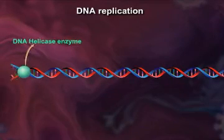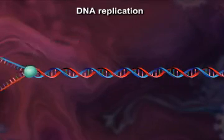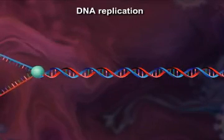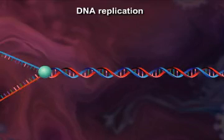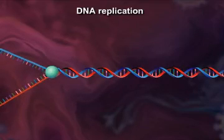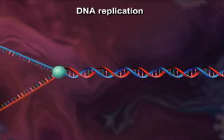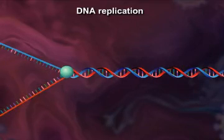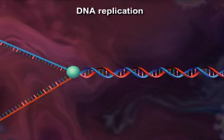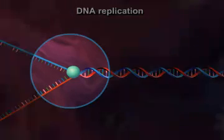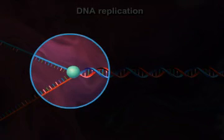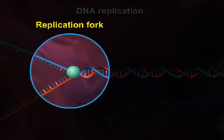DNA helicase enzyme unwinds the DNA strand by breaking hydrogen bonds between complementary base pairs. The point where the DNA is separated and new DNA is synthesized is called the replication fork.